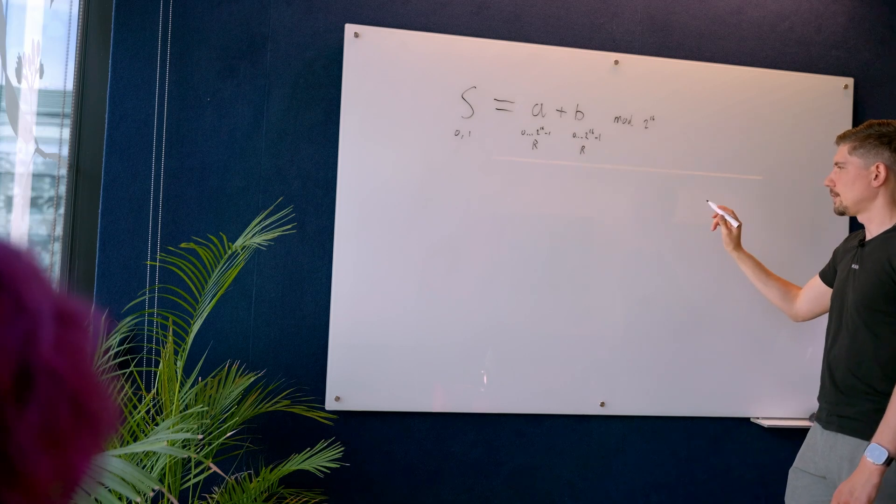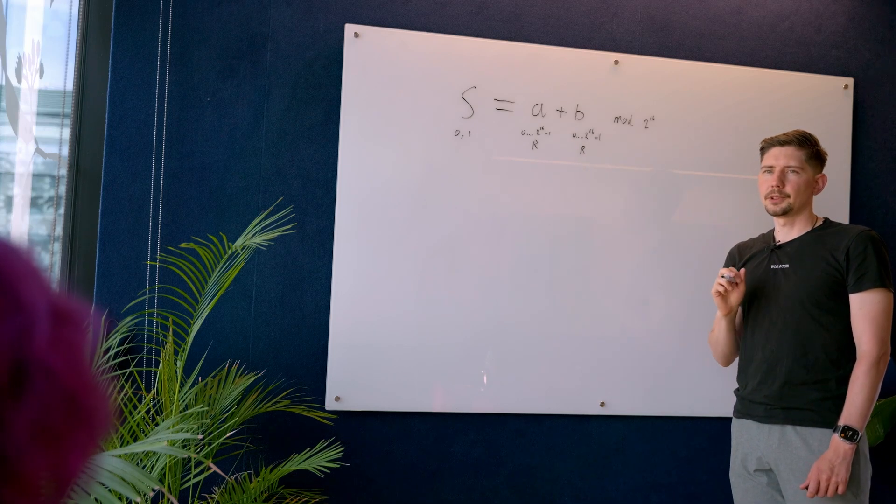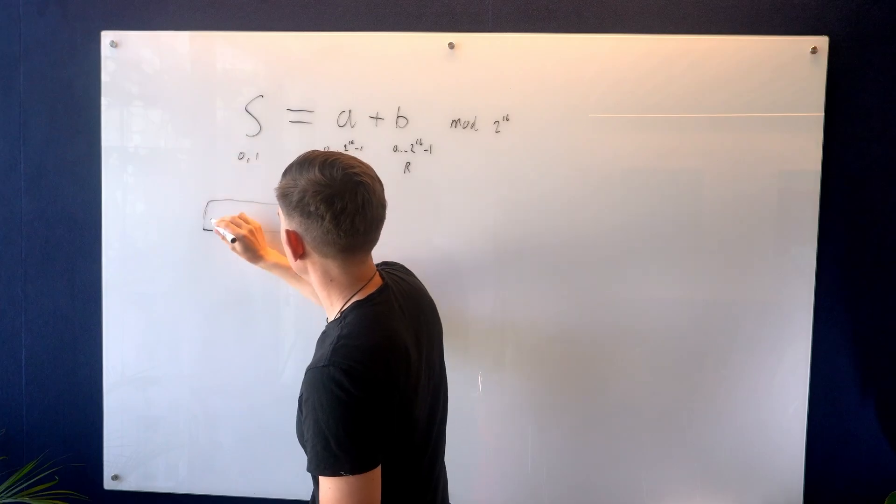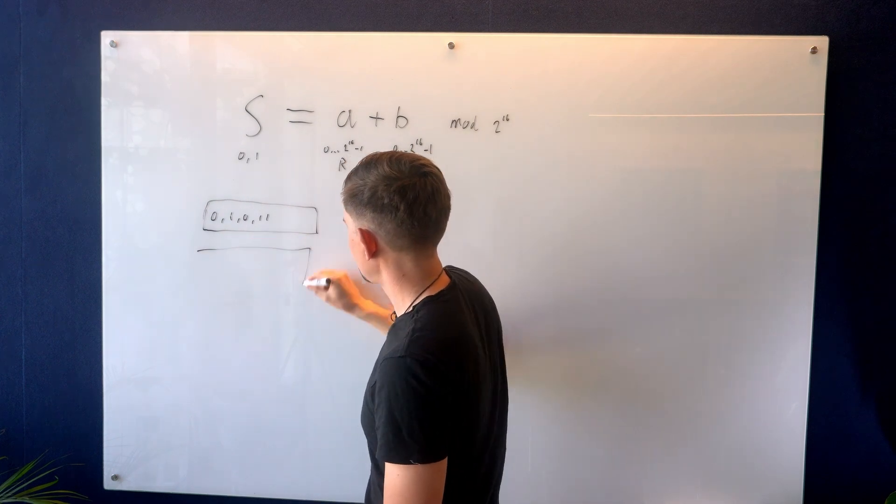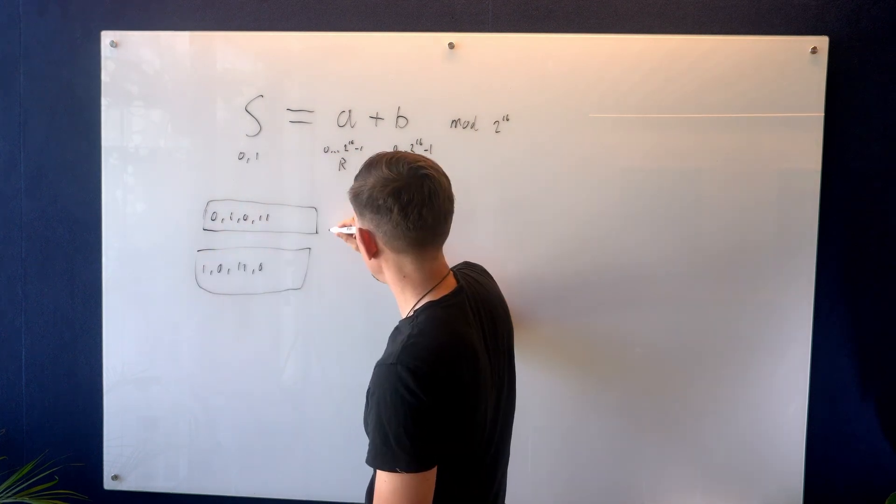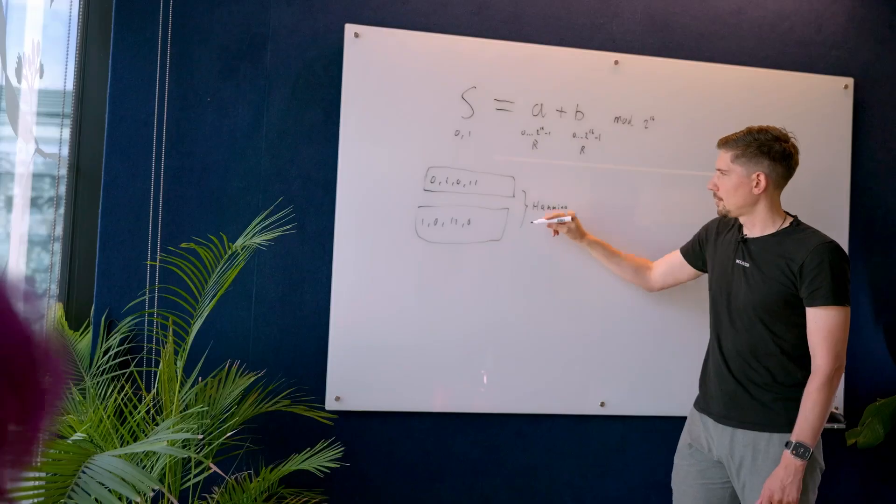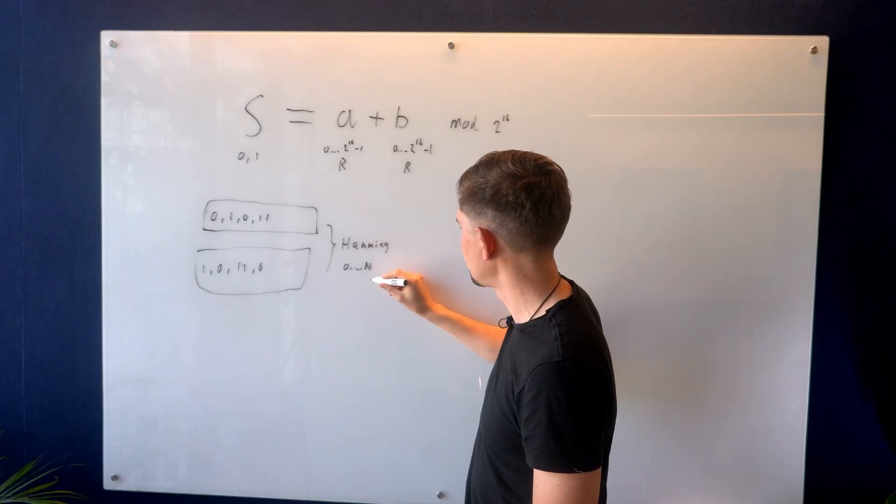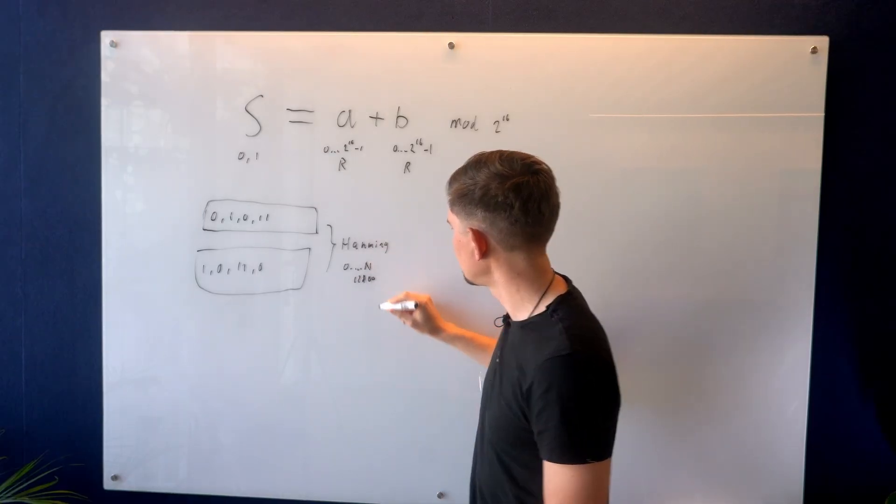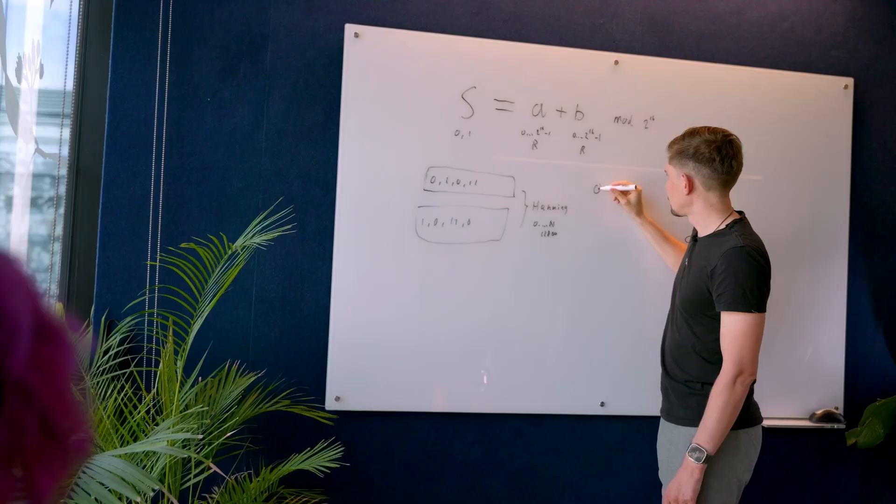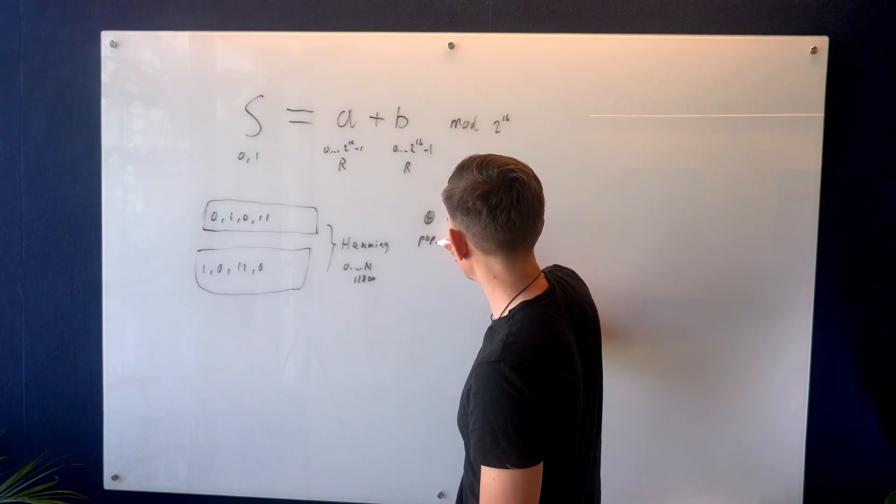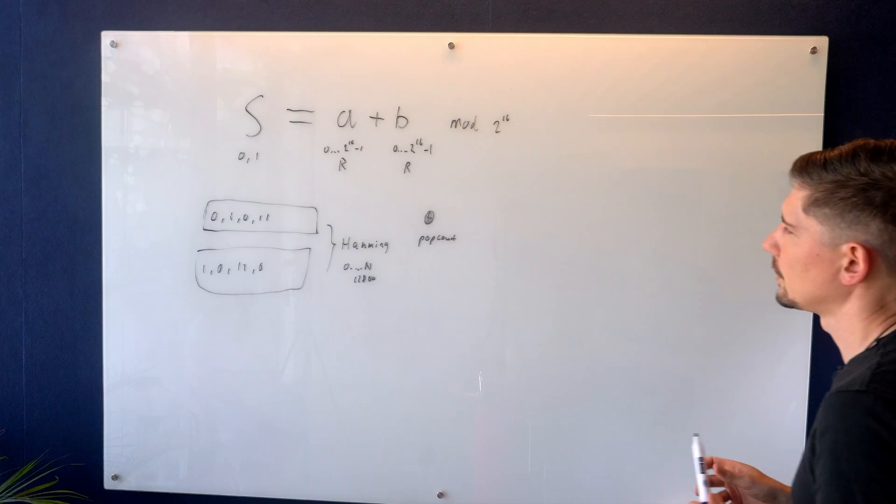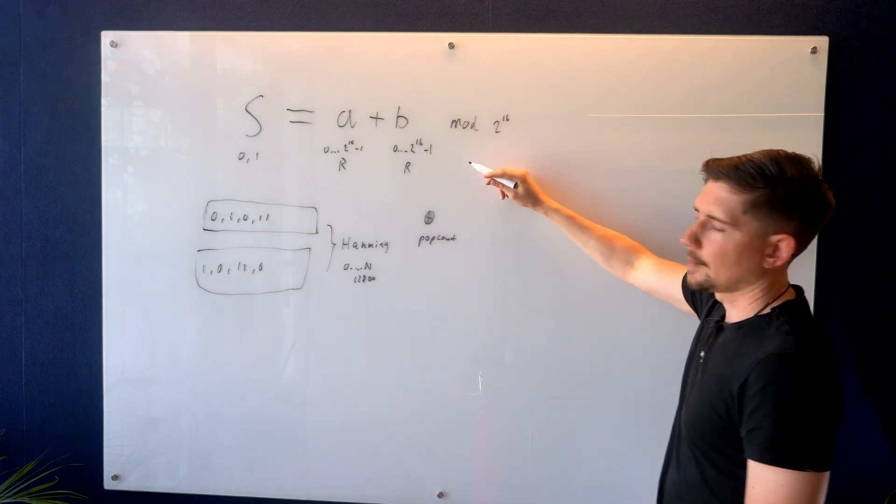Now, the cool thing about this is what you want to do when you are computing an iris code distance is compute a Hamming distance. So an iris code is basically a large vector of bits and you will have two of them that you need to compare. And what you want to know is the Hamming distance, which is how many of these bits are different. This will be a value from one till n, the length of the bits, which is 12,800. So the way you would normally do it is you would XOR the two together and then you would do a pop count over it. So basically XOR them together and then count how many ones you have because those will be the bits that were different.